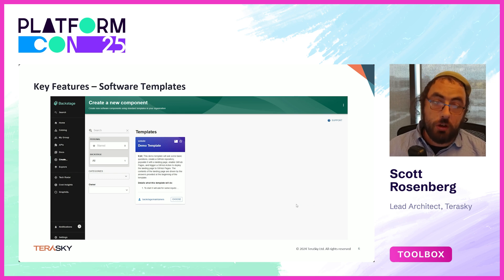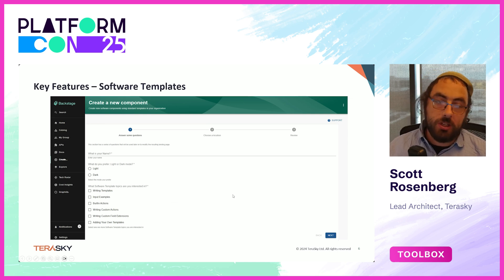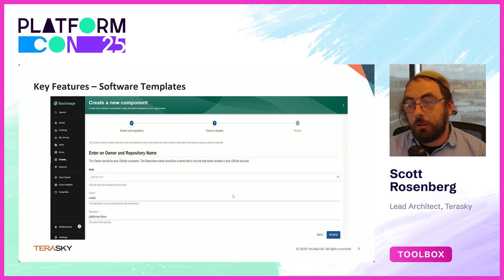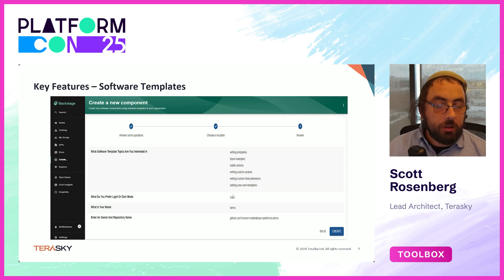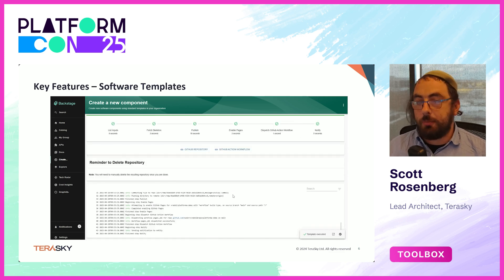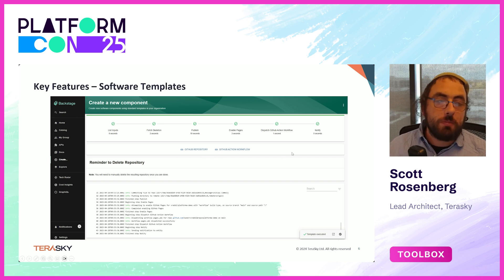Another key feature is software templates, which is a way to easily do scaffolding or starter kits for new projects. Within a template, we define the schema of what the input is going to be — our form with different input types. We also have a GitHub repo creation form where we can set the owner and the repository. Finally, we review our information, and when we click create, the template fetches a baseline, runs scaffolding on top of that, publishes the new repo, enables GitHub Pages, dispatches a GitHub Actions workflow on that new repo, sends a notification, and we get links to the repo and action run. It's very customizable and very flexible.